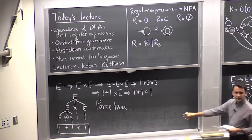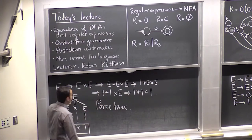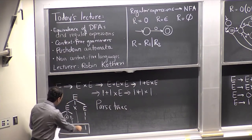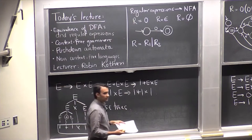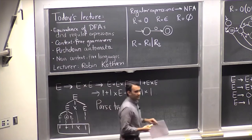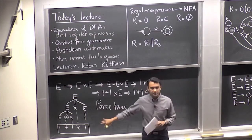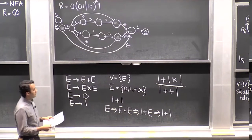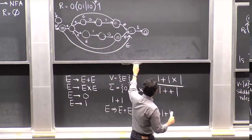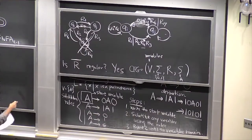Does this notion of a parse tree make sense? All you do is write your start variable at the root, keep applying rules to draw children, and at the end write the terminal symbols down at the bottom leaves so you see what string you've accepted. Let me also show a parse tree for the palindrome derivation. Starting with variable A, we used the rule A → 1A1, then A → 0A0, then A → 1. The leaves read 1 0 1 0 1, which is a palindrome.